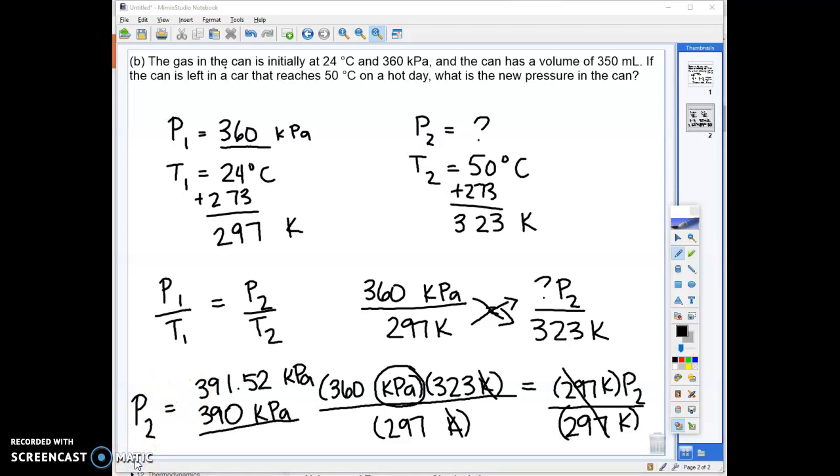So that's how you work this type of problem. The last thing that you should do when you work gas law problems is make sure your answer actually makes sense. So we know that if pressure goes up, temperature goes up. If temperature goes up, pressure goes up. So in this example, our temperature went up. We should expect our pressure to also increase. When we look at our answer, we see, yes, we did get an increase. We started at 360, we ended at 390. So yes, that is an increase. So yes, my answer makes sense in the context of this problem.